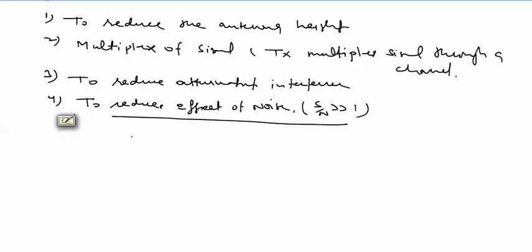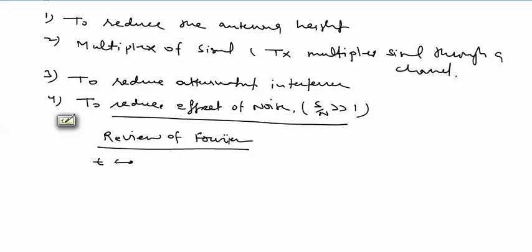Before starting different types of modulation, we will discuss a review of spectrum — a review of Fourier transform. Fourier transform means time domain to frequency domain conversion. There are two ideas: Fourier series and Fourier transform. Fourier series is used for a periodic signal, while Fourier transform is used for an aperiodic signal.